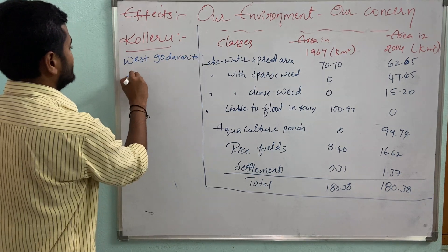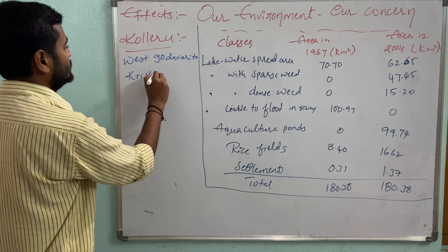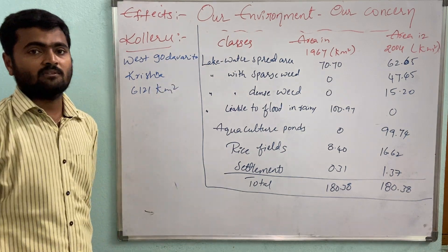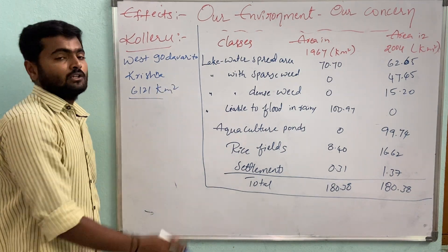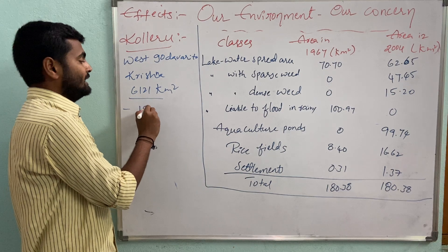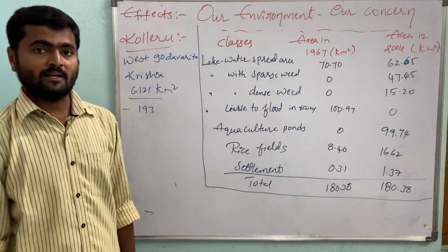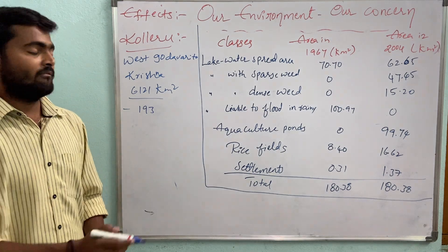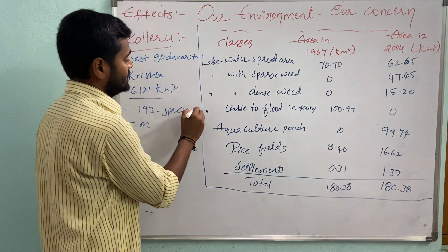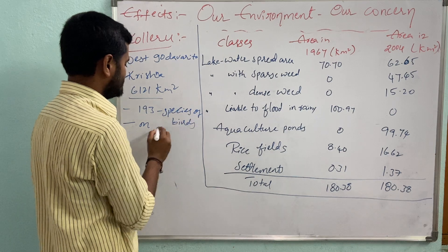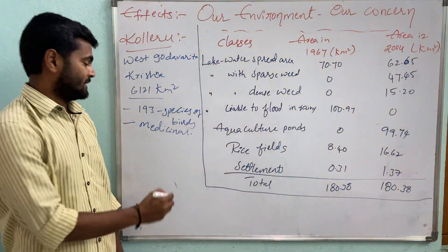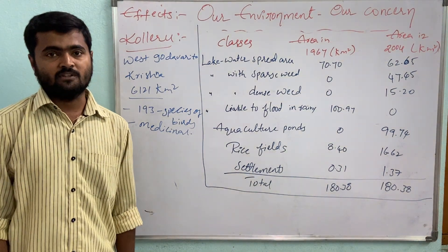Kolleru lake extends up to an area of 616 square kilometers. It is filled with a lot of freshwater and wetland areas. In this area, almost 193 species of birds are found, along with a lot of flora and fauna, including many medicinal plants.